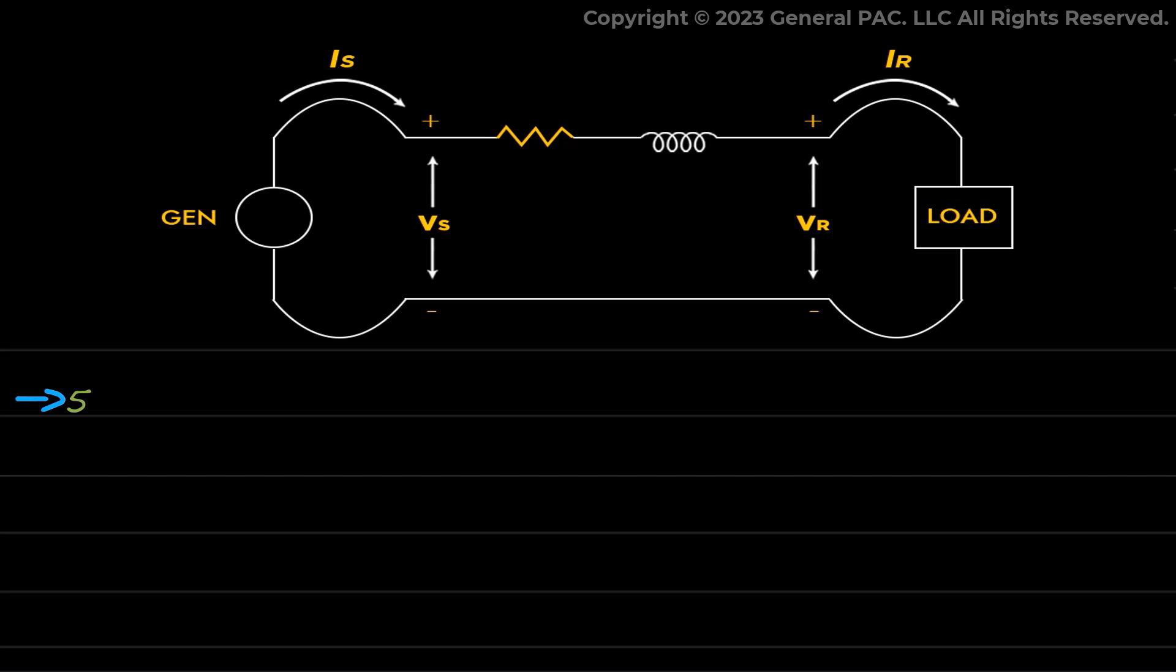Transmission lines which are up to 50 miles (80 kilometers) in length and have voltage less than 20 kV may be represented as short transmission lines.